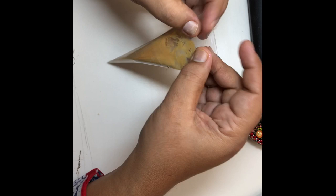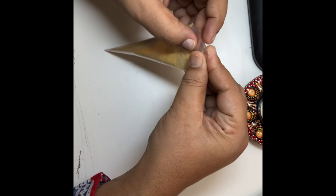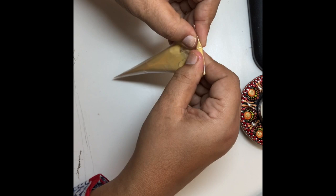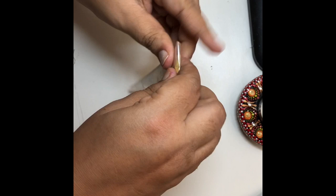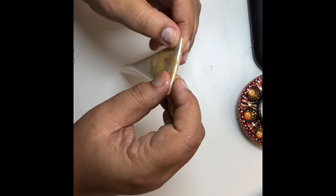Now fold nicely two to three times from the top, secure it nicely and then put the tape. You have to put the tape two to three times so that while pressing the cone, paint should not come out from the top.